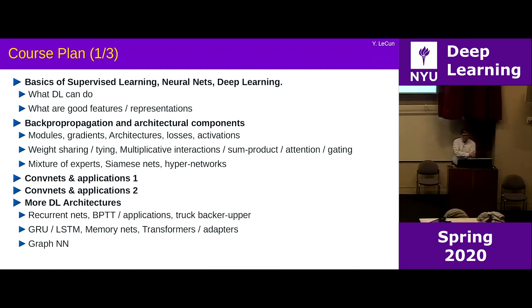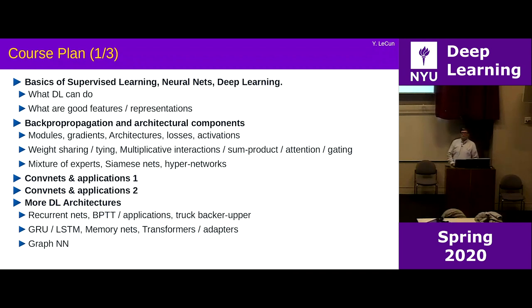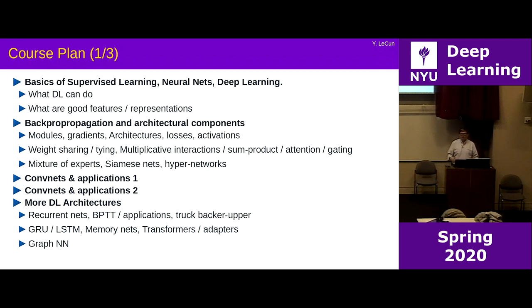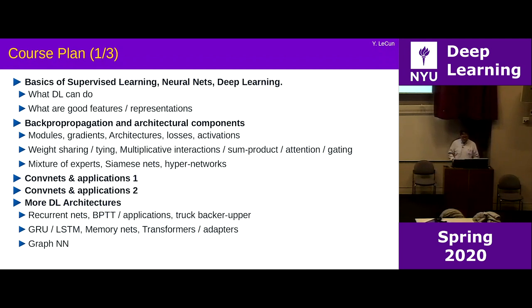The course plan starts with an intro to supervised learning, neural nets, and deep learning — what deep learning can do, what it cannot do, and what are good features. Deep learning is about learning representations. Next week will cover backpropagation and basic architectural components: building neural nets out of modules, computing gradients, automatic differentiation, various types of architectures, loss functions, activation functions, weight sharing, weight tying, multiplicative interactions, attention gating, and macro architectures like mixture of experts, hypernetworks, etc.